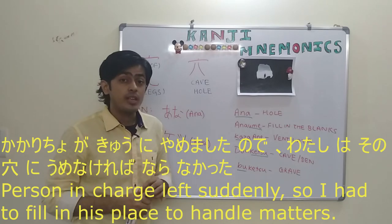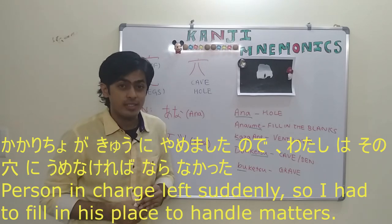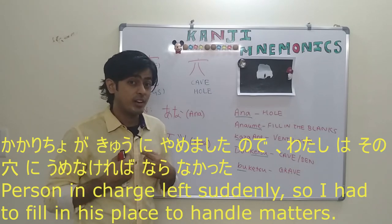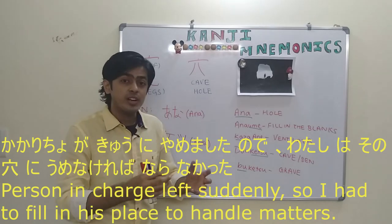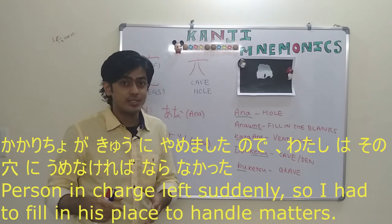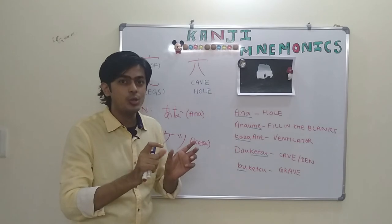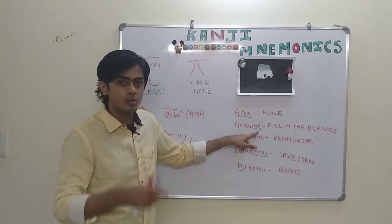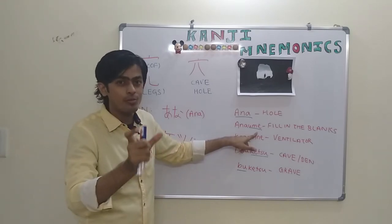Another sentence that we can form using this ana is: Kakaricho ga kyuni yamemashita no de, watashi ga sono ana ni umenakereba naranakatta, which means the person in charge went on leave immediately, so I had to fill in his place with all my efforts. Kakaricho means person in charge, kyuni means suddenly, and umeru means to fill. So umenakereba naranakatta means I had to fill the void or fill the space.